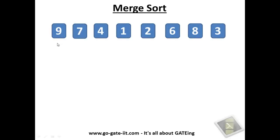We have the given sequence of numbers as shown here, which contains 9, 7, 4, 1, 2, 6, 8, and 3. Let us see how Merge Sort works. Here we will have two scenarios: even sequence of items and odd sequence, though not much difference. Before proceeding, let me tell you — by the word 'two-way,' we mean it will merge two blocks together in one iteration.